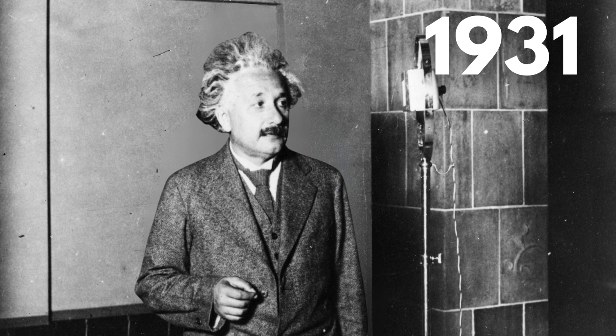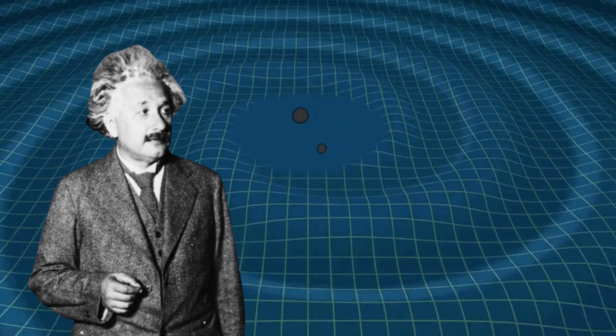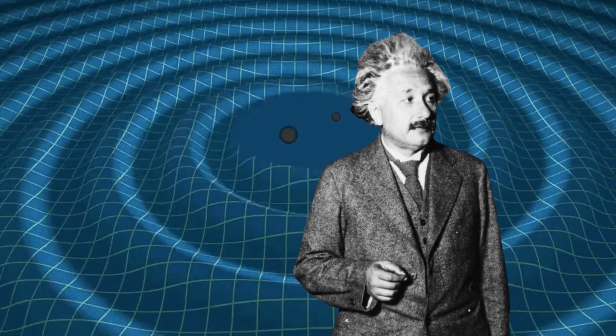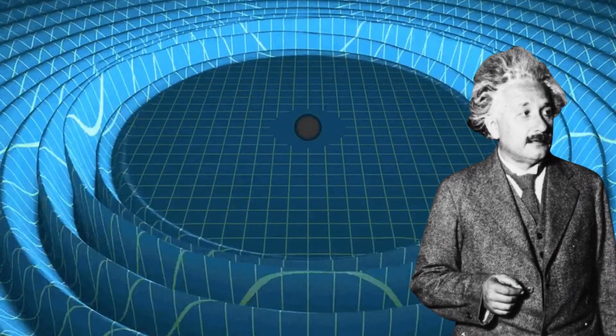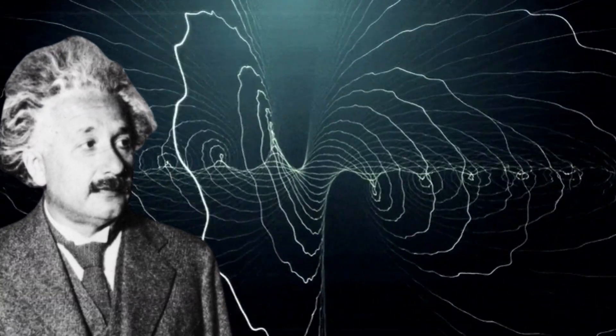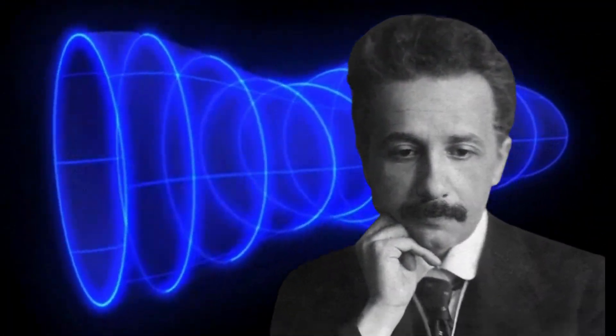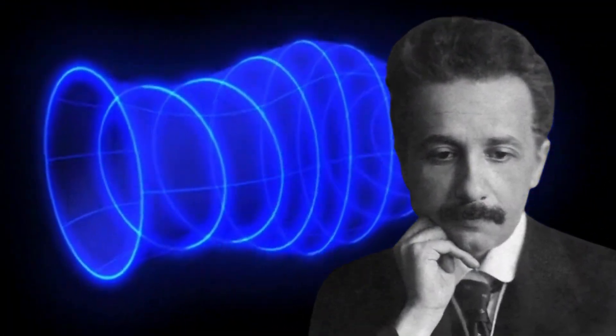In 1931, Einstein doubted his own gravitational waves. However, subsequent research revealed the existence of gravitational waves, which arise from mass gravitational interactions that cause vibrations in the fabric of space-time. This discovery was a significant breakthrough in the development of cosmological models.